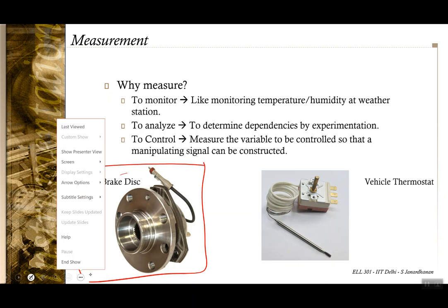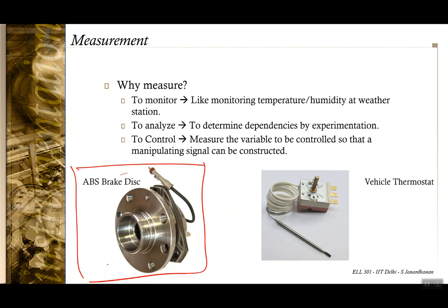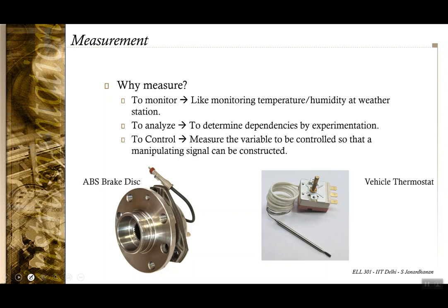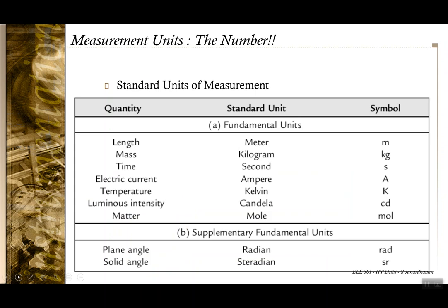Similarly, in an ABS — active braking system — depending upon the torque in the wheel, the amount of braking torque can be applied so that passengers don't feel a sudden jerk. Gradual braking can be done even though a sudden brake is applied. For that, you have to measure how fast the wheel is moving, and depending upon the motion of the wheel, the braking torque is adjusted. So a measuring instrument is needed in that case too.